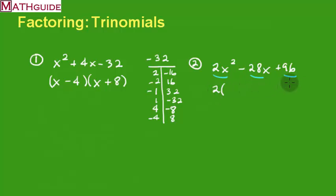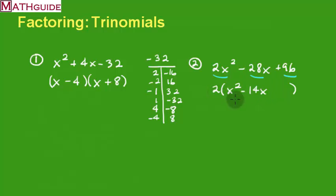I'll factor out a common factor of 2. Dividing all numbers by 2: 2 times x squared minus 14x plus 48. I get back the original problem via the distributive property. Now that the coefficient of x squared is 1, this problem is exactly like the previous one. I put down 48 and look for two numbers that multiply to 48.